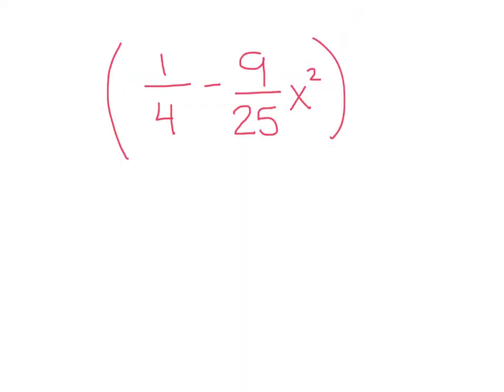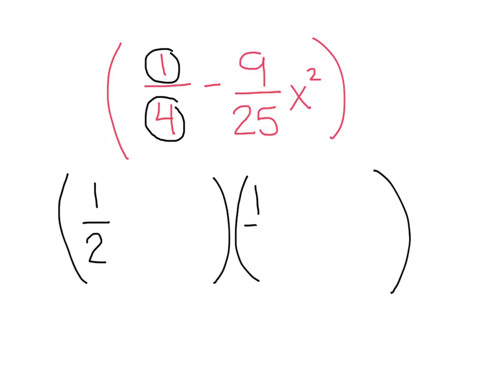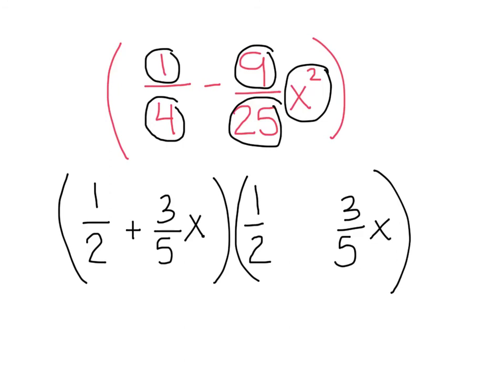Now, look how ugly this next example is. 1 fourth minus 9 25ths x squared. It might look pretty intimidating, but in fact, it's actually pretty nice. Look at all these numbers. What's special about 4, 9, 25, x squared, and even 1? They're all perfect squares. So, this actually factors very nicely. Again, it looks ugly and intimidating, but it's not too bad. Ask yourself, what makes 1 perfect? Well, remember that's 1 times 1, and what makes 4 perfect is 2 times 2. So, this is really just 1 half times 1 half. What makes 9 perfect, and what makes 25 perfect? Well, that's a 3 and a 5, and x squared is perfect because of that x. So, 3 fifths x. And remember, 1 gets a plus, and 1 gets a minus. So, don't let those fractions scare you. Just ask yourself, why are they all perfect?